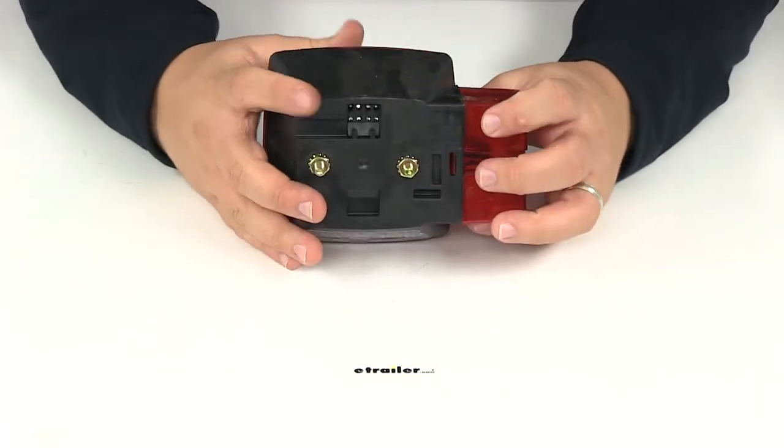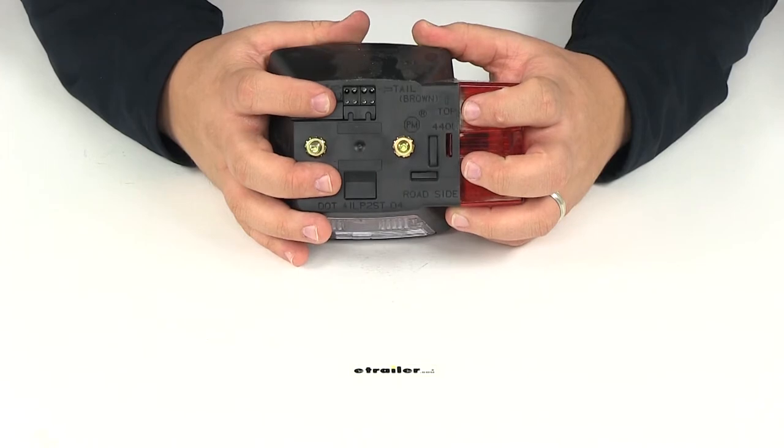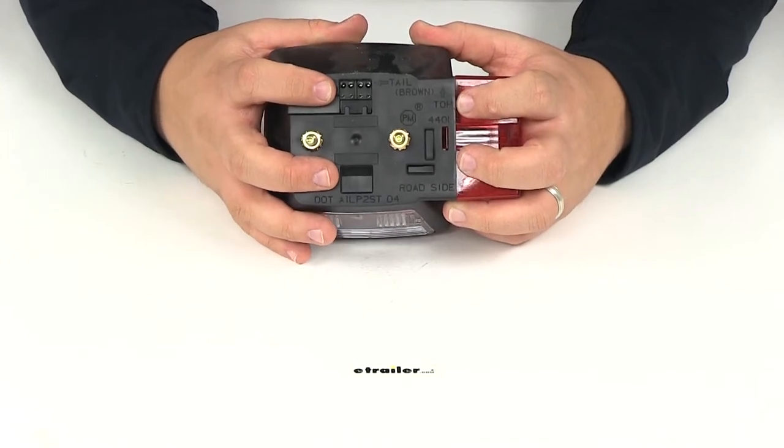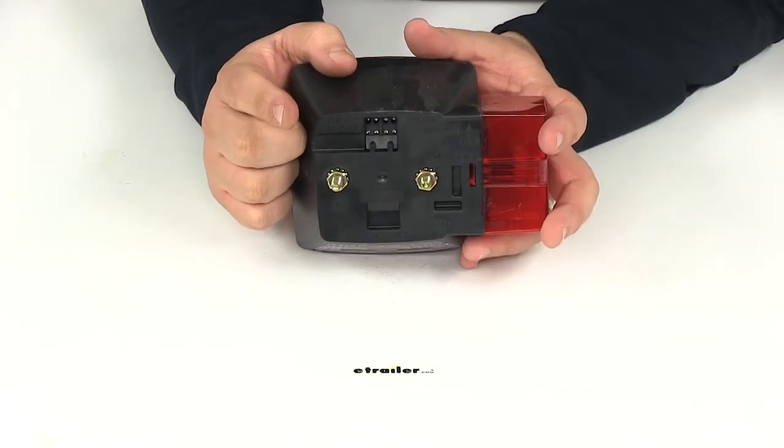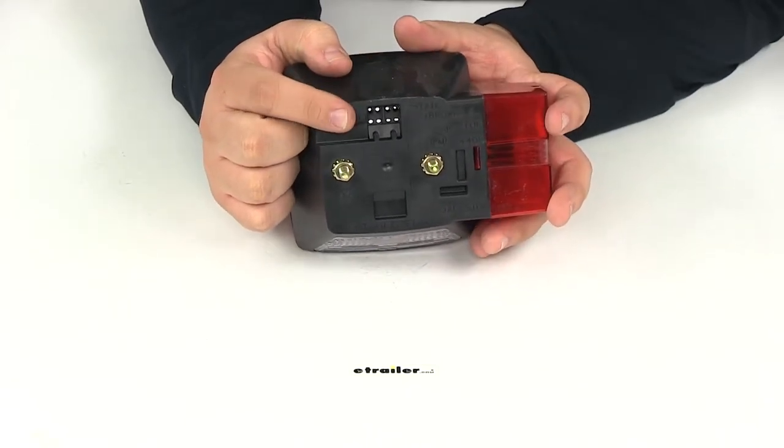Here on the back it features quick connect wiring. All you have to do is insert the stripped wire into the holes for a secure connection. Wiring is sold separately. You can refer to our website and find that available right here at etrailer.com.